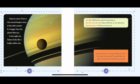Saturn's moon, Titan, is the second largest moon in the solar system. It is bigger than the planet Mercury. In the night sky, Saturn looks like a bright yellow star. How big? Seven hundred and sixty-four Earths could fit inside Saturn. How far from the Sun? About ten Earth-to-sun distances. How many moons? Eighty-two discovered so far.